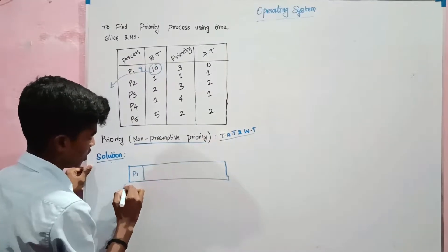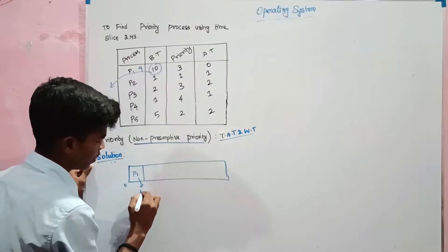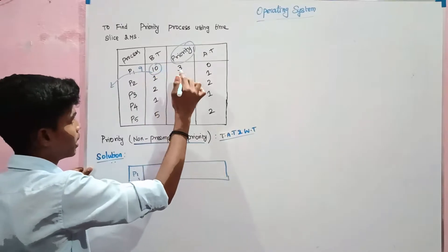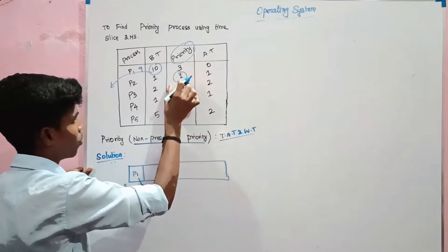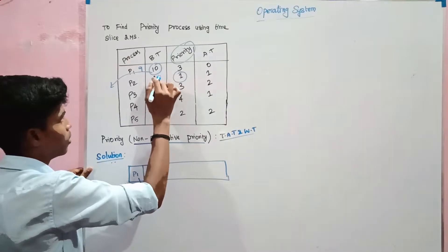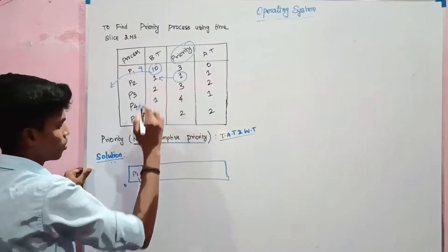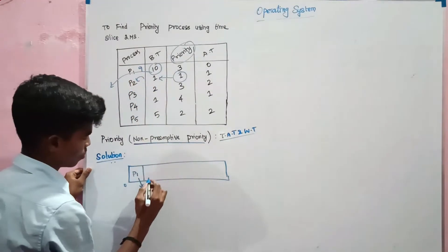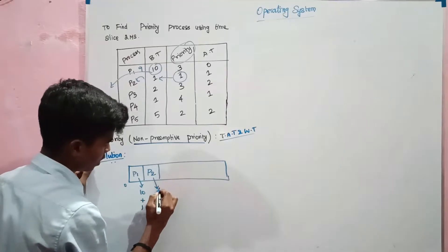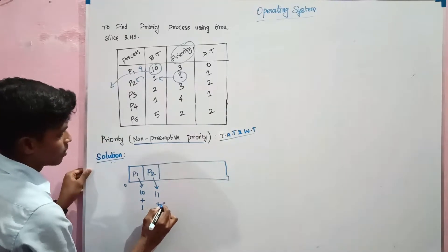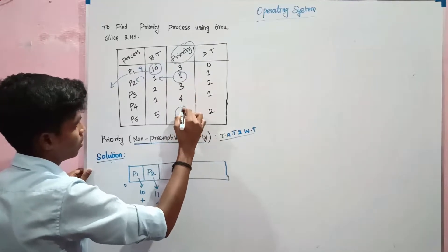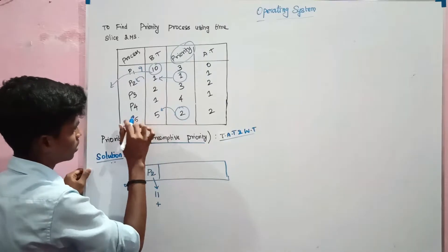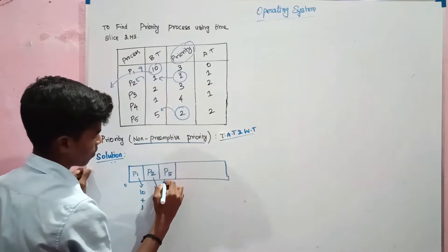P1 — in slot 0, P1 value is 10. Next priority: minimum value is 1. So, 1 plus 10 equals 11. Then, the second highest value is 2. First time value is 5 — that is P5. So, 11 plus 5 equals 16.